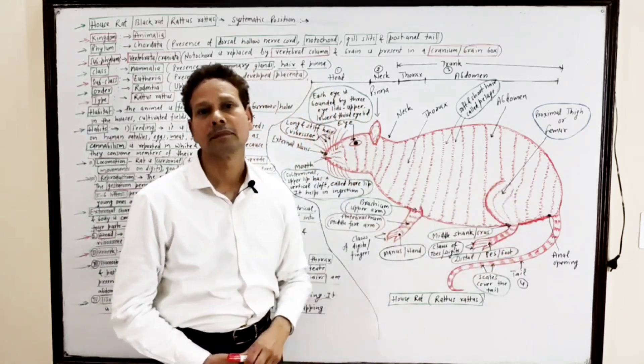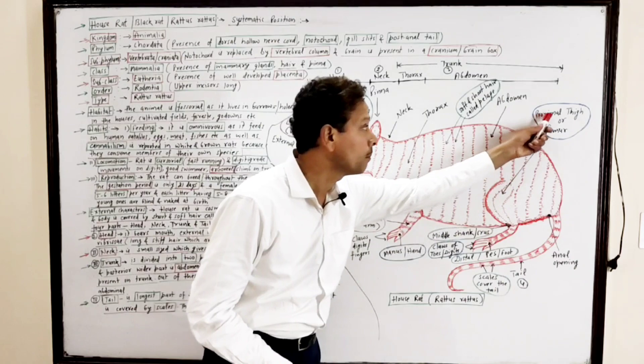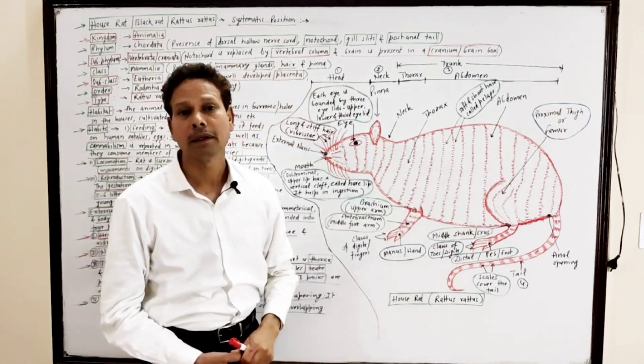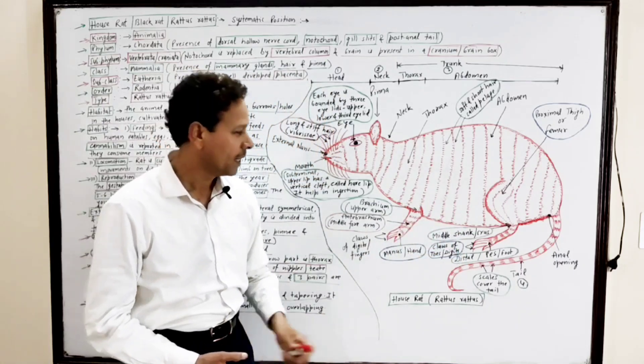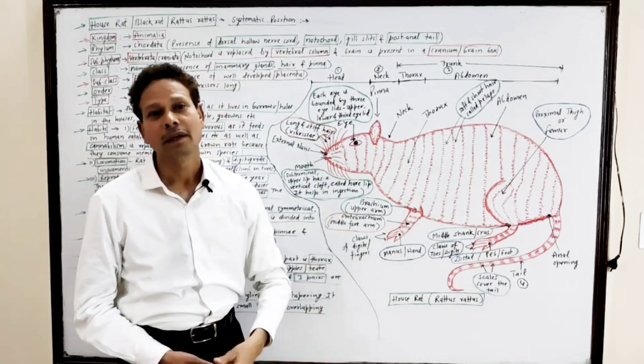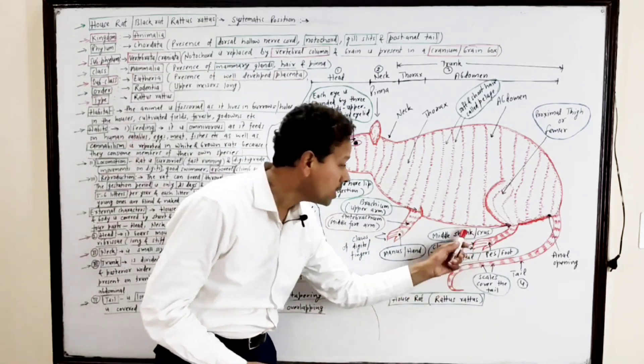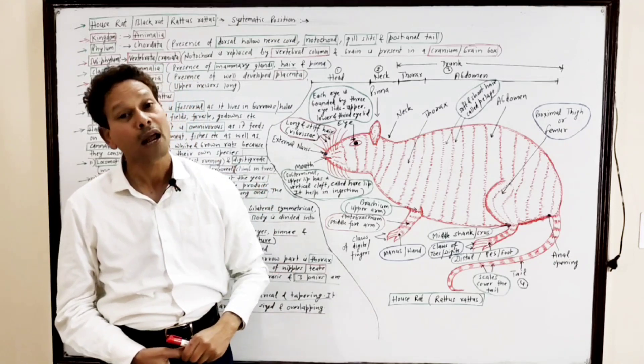The hindlimb is again divided into three parts: the upper proximal part is thigh or crus or shank, the middle part is leg, and the distal part also possesses toes with claws.